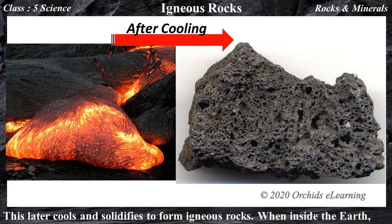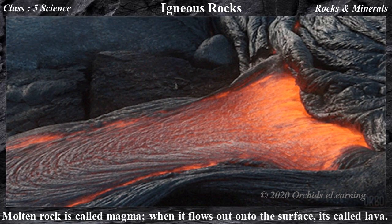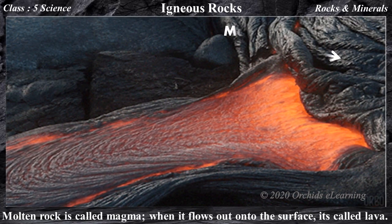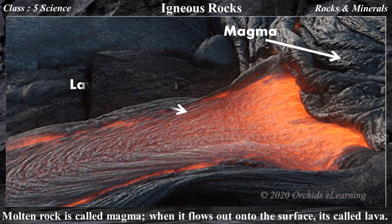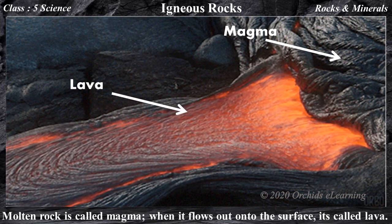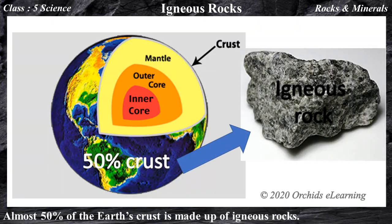When inside the earth, molten rock is called magma. When it flows out onto the surface, it is called lava. Almost 50% of the earth's crust is made up of igneous rocks.